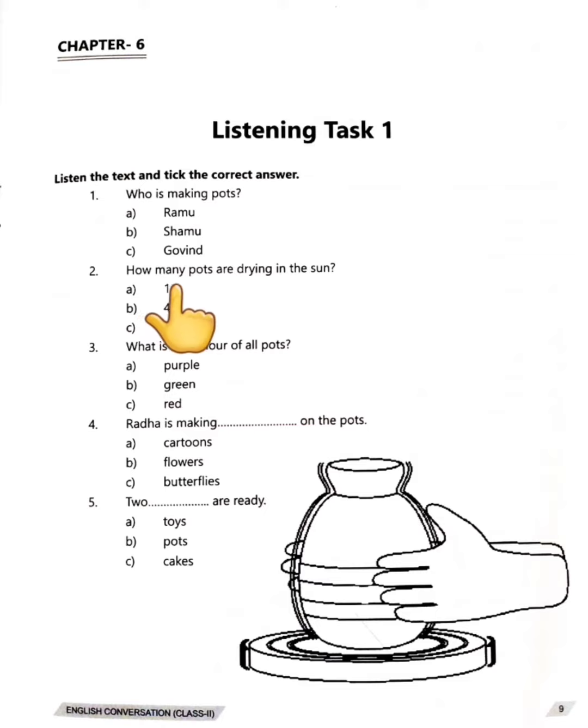Next question is, how many pots are drying in the sun? Toh padhke bich beta, kinne pots sukh rahe hain? 1, 4 or 10?